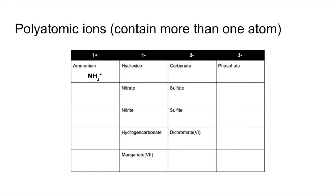Moving on to the 1 minus ions. Hydroxide is OH minus. Nitrate is NO3, 1 minus. Nitrite is NO2, 1 minus. Hydrogen carbonate is HCO3, 1 minus. And an ion that you'll come across more likely in year 13 is the manganate 7 ion. That's a Roman 7, by the way, VII. That's the MnO4, 1 minus ion.